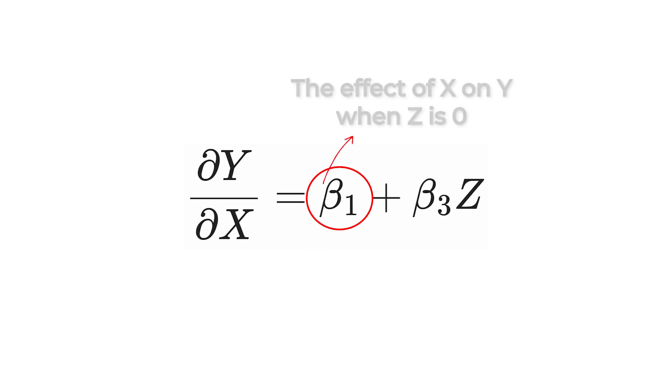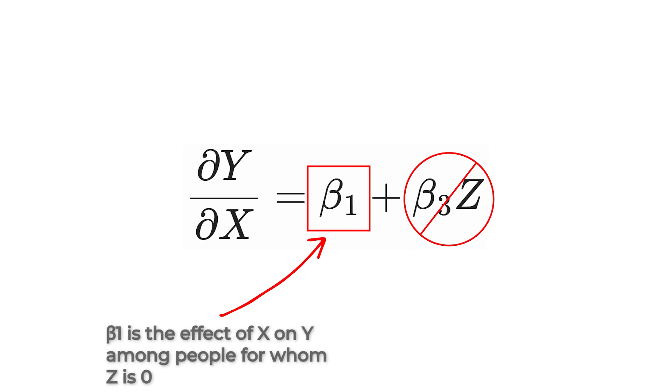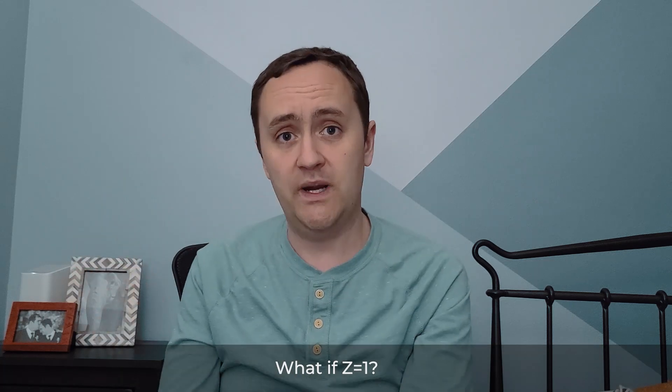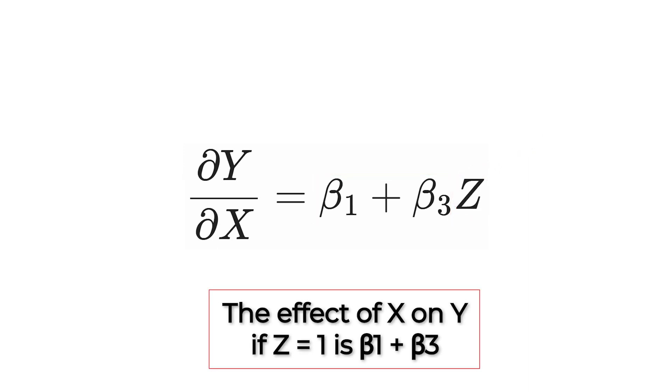Let's look at what beta 1 is. That's the effect of x on y when z is zero. If I plug in z equals zero, the beta 3 times zero term drops out, and we're left with just beta 1 — so beta 1 is the effect of x on y among people for whom z equals zero. Now what about the z equals one group? Plugging z equals one into the equation, that z turns into one, and we get beta 1 plus beta 3. So the effect of x on y among the z equals one group is beta 1 plus beta 3.